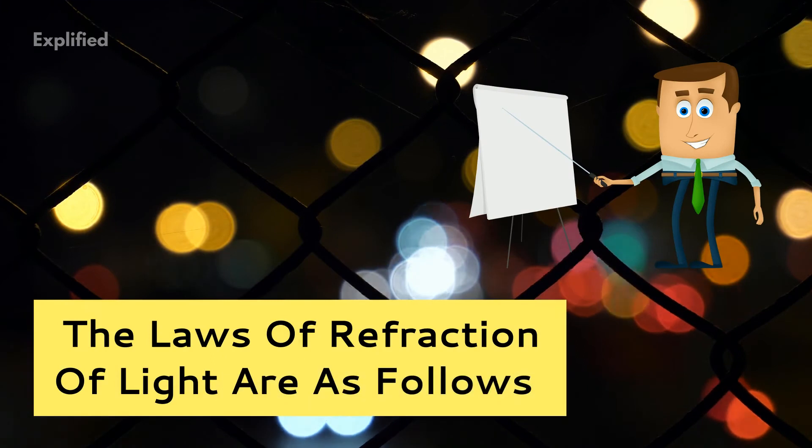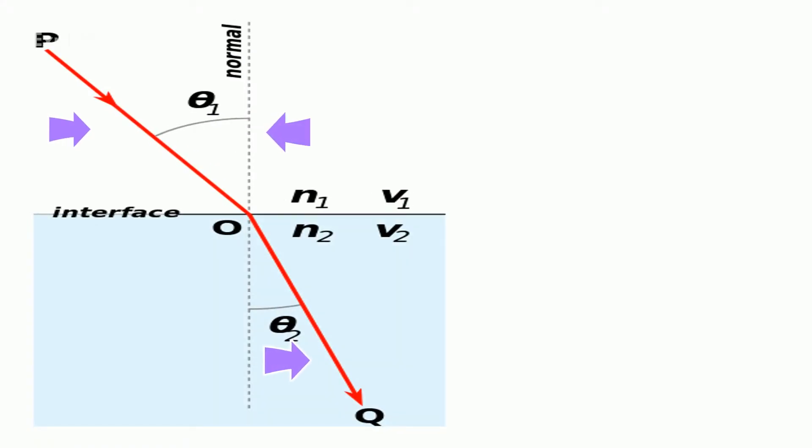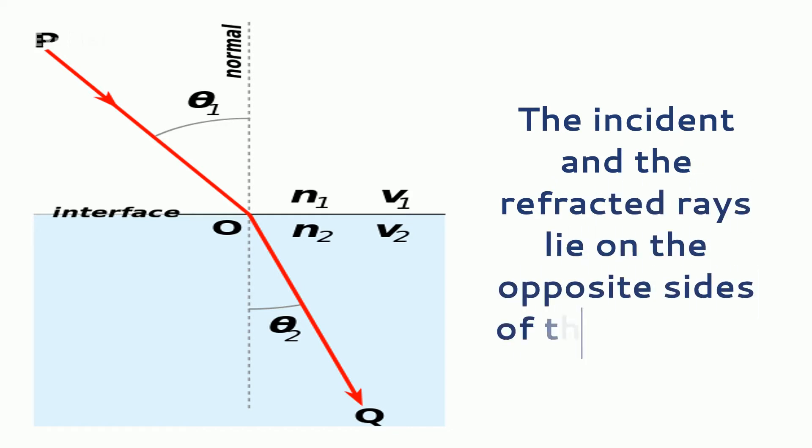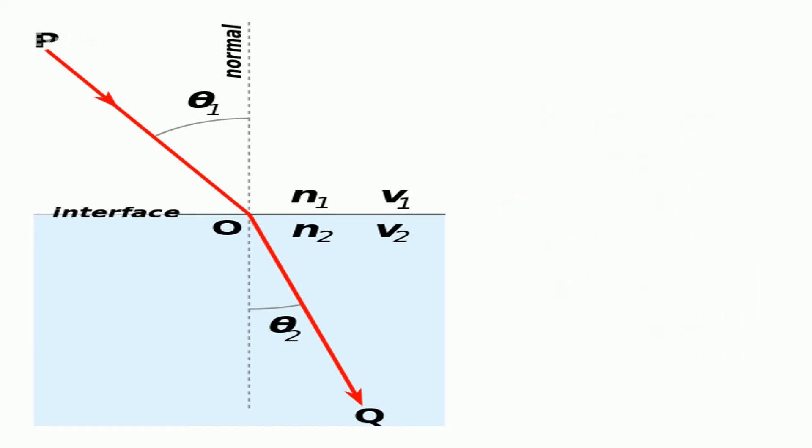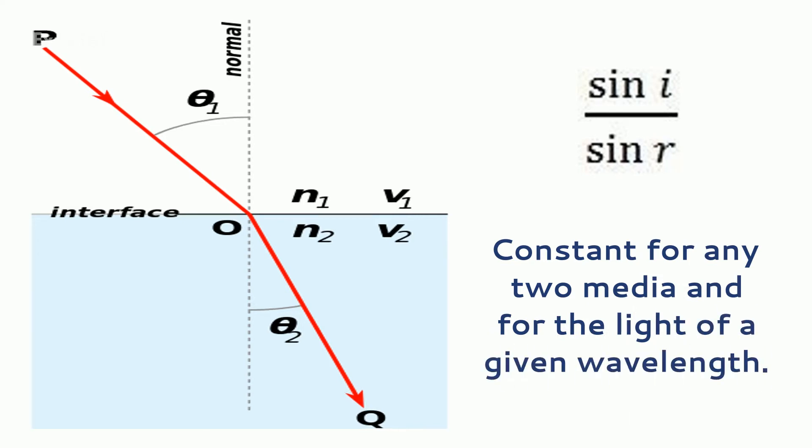The laws of refraction of light are as follows. The incident ray, the refracted ray and the normal of the surface of separation at the point of incidence lie in one plane and the incident and the refracted rays lie on the opposite side of the normal. The ratio of the sine of the angle of incidence to the sine of the angle of refraction is a constant for any two media and for the light of a given wavelength.